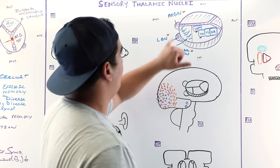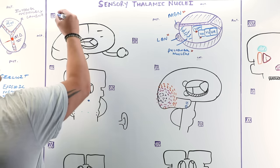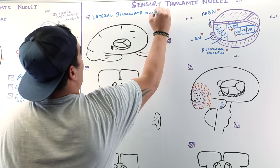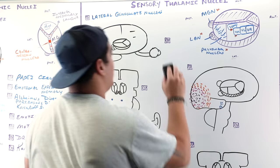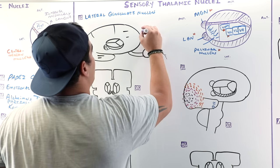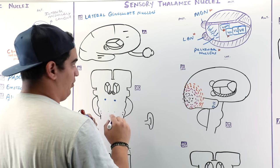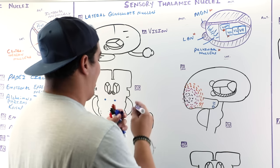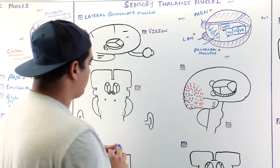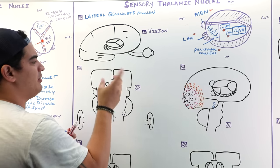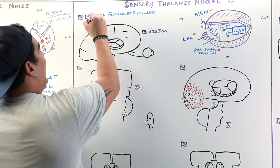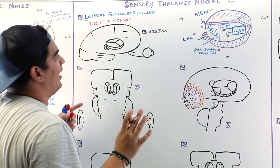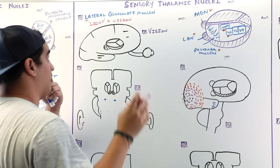Let's start with the lateral geniculate nucleus. The basic thing to remember: it is involved in the visual pathway — vision. A mnemonic to help: L for lateral, L for light — that's vision. So lateral geniculate nucleus equals the visual pathway. Remember: lateral = light = vision.